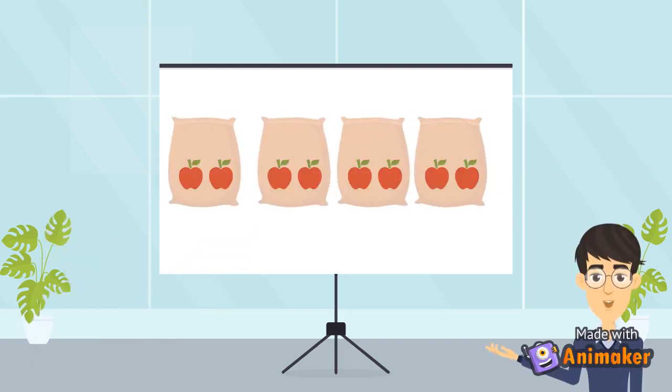Here we have four bags. Each bag has two apples. So can we quickly count how many apples we have? Yes, it is four bags multiplied by two apples. That equals to eight apples.